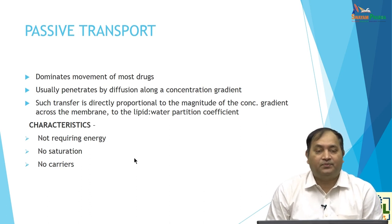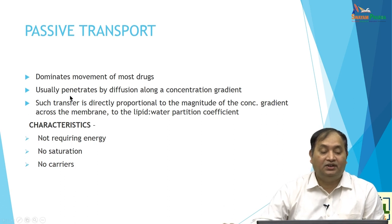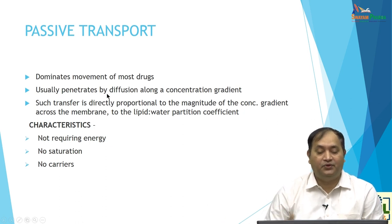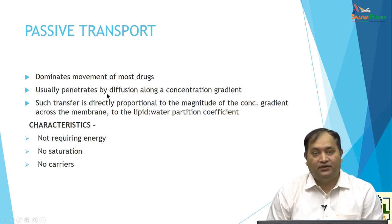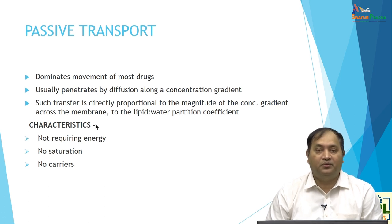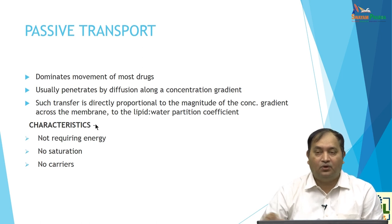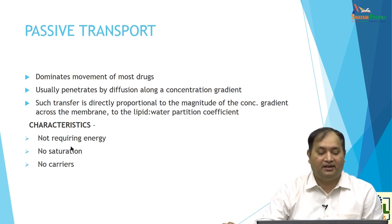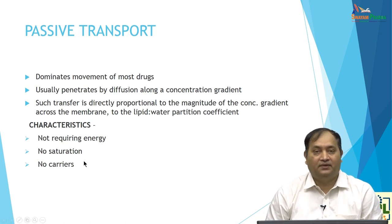Passive transport dominates the movement of most drugs. Drug penetration occurs by a diffusion mechanism along the concentration gradient, from one compartment to another. Transfer is directly proportional to the concentration gradient across the membrane and to the lipid-water partition coefficient. If a drug is highly lipid-soluble or less ionized, it is easier to absorb. Passive transport requires no energy and has no saturation or carrier, unlike active transport.